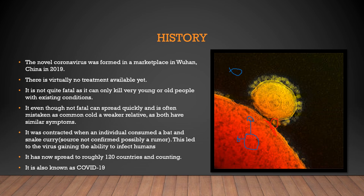The coronavirus was formed in a marketplace in Wuhan, China, at the end of 2019. There is virtually no treatment available yet, which is what makes it so dangerous — if you get infected there is no vaccine or medication doctors can prescribe. The most they can do is keep you on ventilator support so that you don't die if you go into a coma. It is not quite fatal, as it mainly kills very young or old people with existing conditions such as diabetes or stroke.